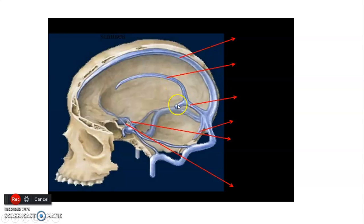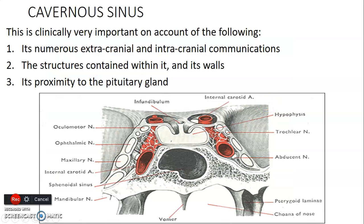The cavernous sinus is important because it has extensive intra- and extracranial communications, contains critical structures within it and on its walls, and is in very close proximity to the pituitary gland. Any infection in the cavernous sinus can spread via these communications and affect the structures on or within its wall, while pituitary pathology can also affect these structures.